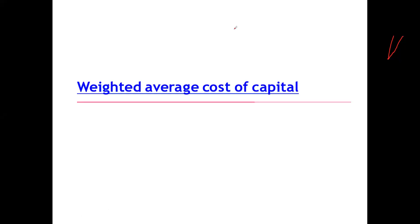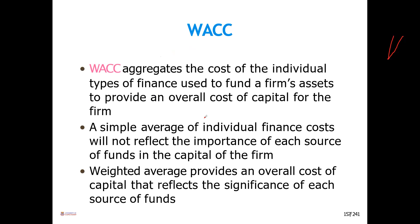The final thing we'll cover is weighted average cost of capital — some books call it WACC. When your capital structure has equity, debt, and preference shares, and you issue all those securities, what is the average cost? Weighted average cost of capital aggregates the cost of individual types of finance used to fund a firm's assets to provide an overall cost of capital. A simple average does not reflect the importance of each source of funds in the capital structure.